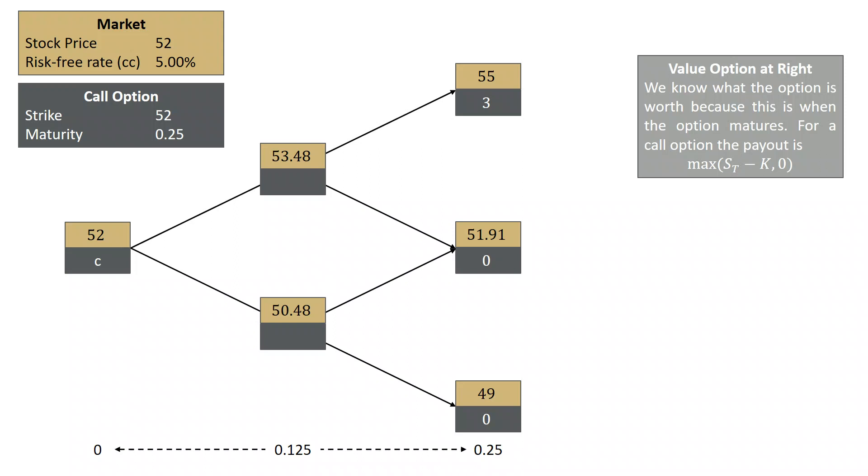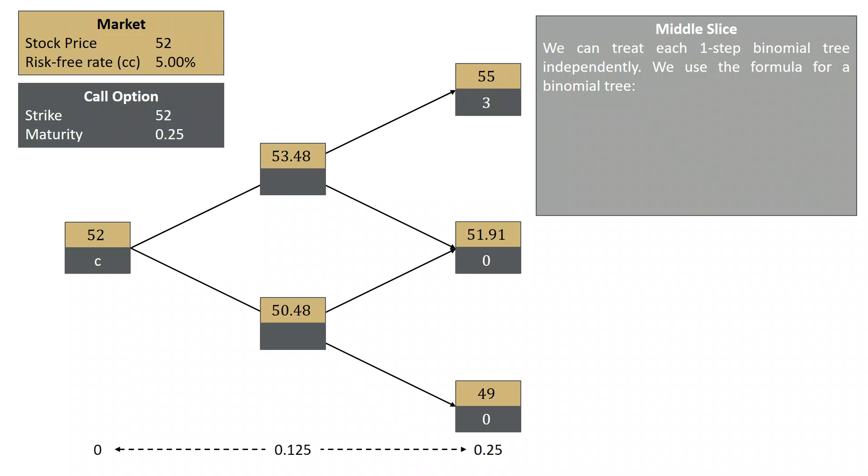Now we work our way from right to left through our tree. So we're going to think about the middle of that slice. And here what we do is we treat each node in the middle slice as having a single binomial tree to the right of it. So you can see that node 53.48 has a small one-step binomial tree to the right.